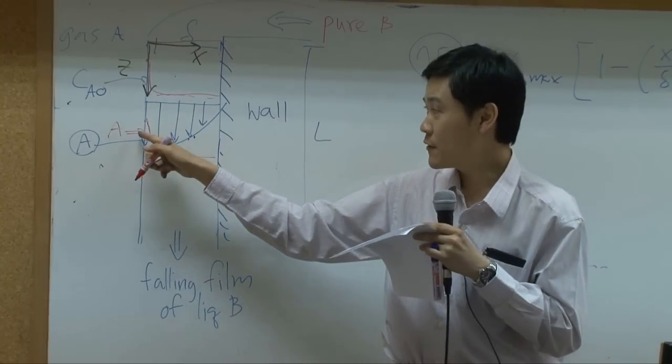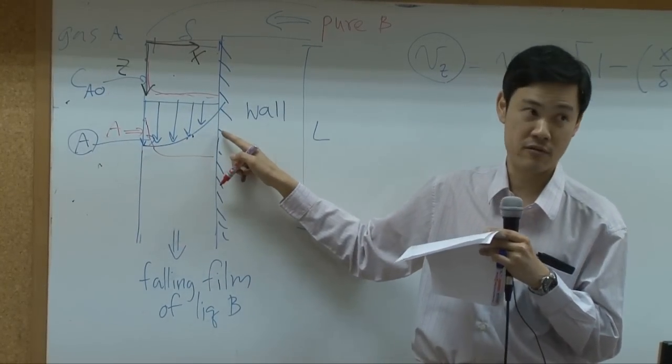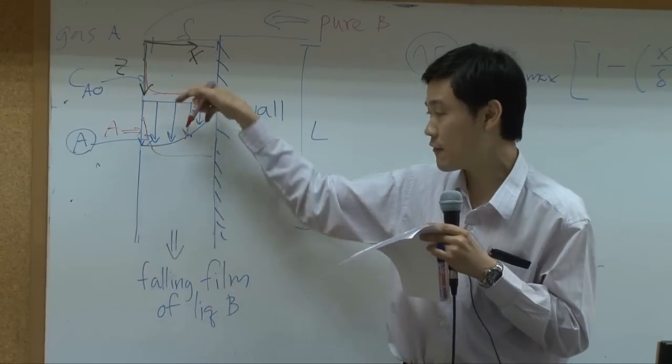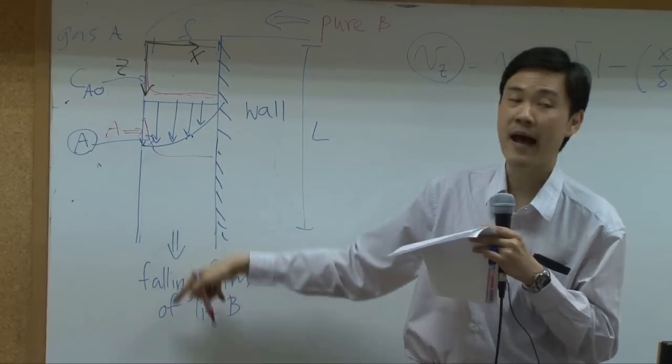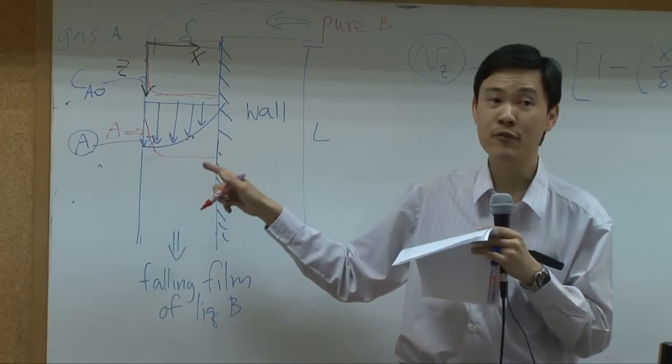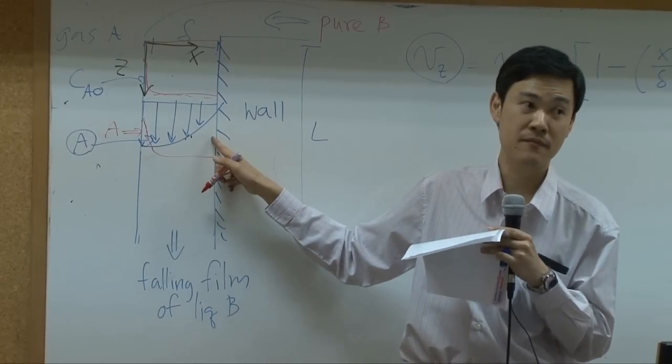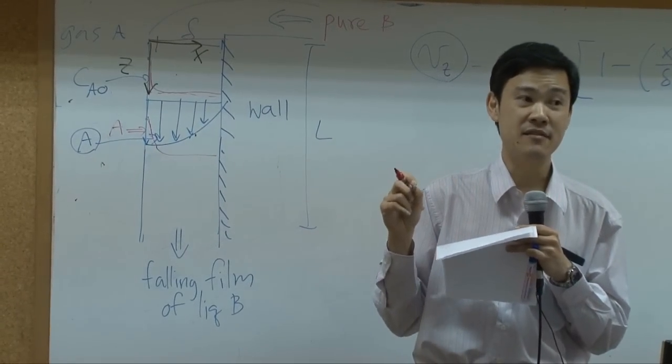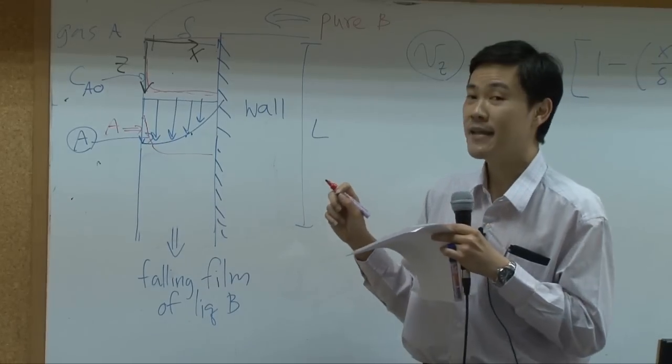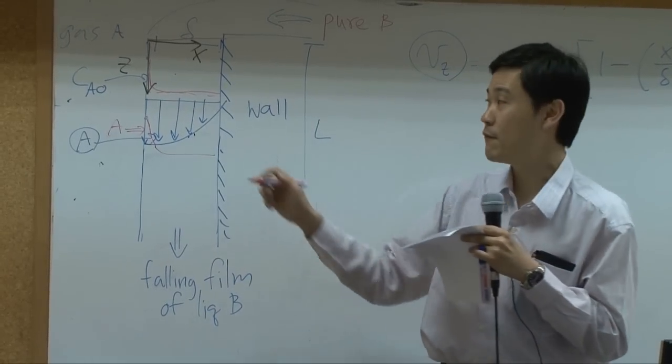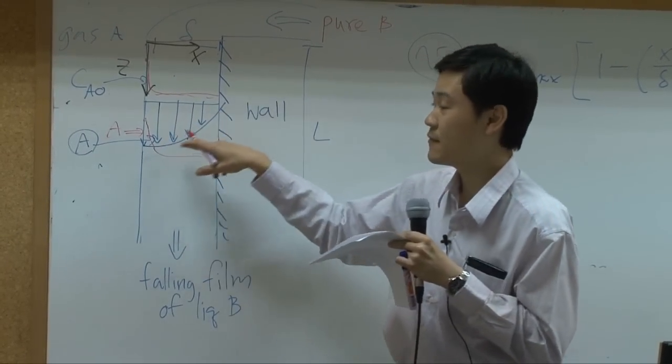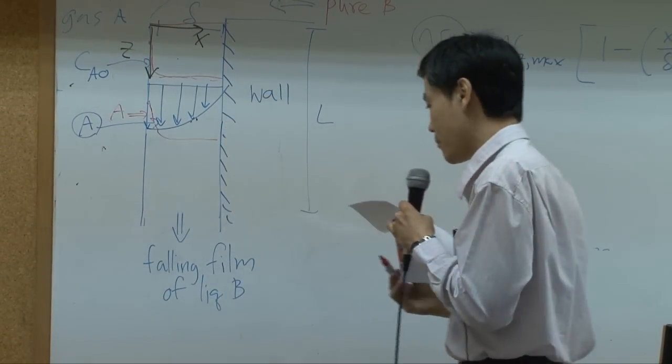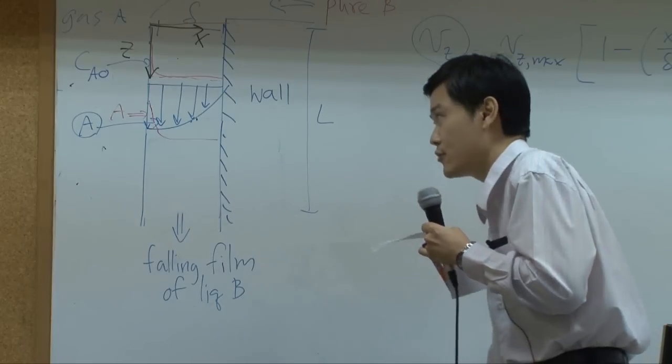So whenever A is dissolved it will be swept downward. In other words, A would never reach this layer, right? But you can never know whether A has never reached it or not. All you can say is you can approximate velocity profile from the parabolic velocity profile like this. We can approximate it to be like this.